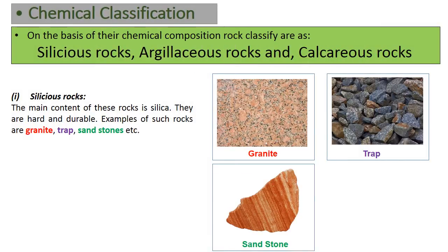Now let's discuss siliceous rocks, which is the chemical classification of rock. The main content of these rocks is silica. They are hard and durable. Examples of such rocks are granite, trap, sandstones, etc. You can see the photographs of such rocks here.